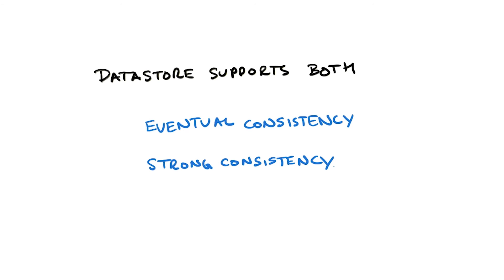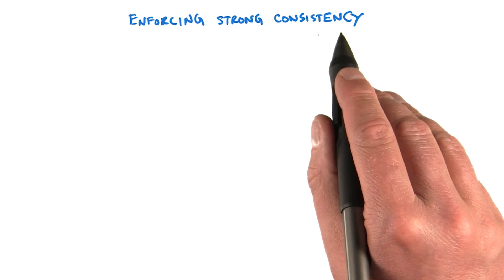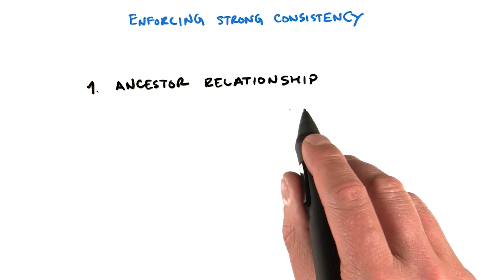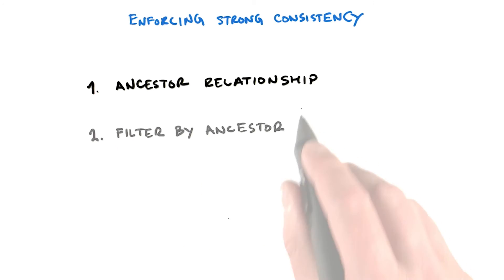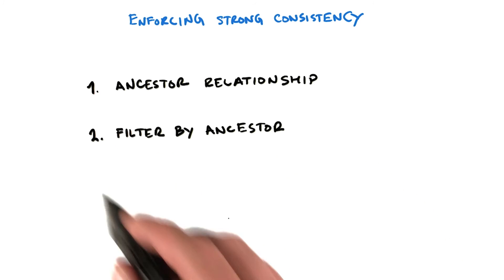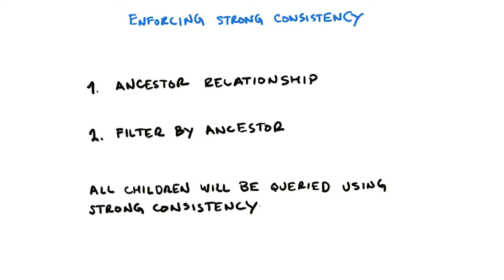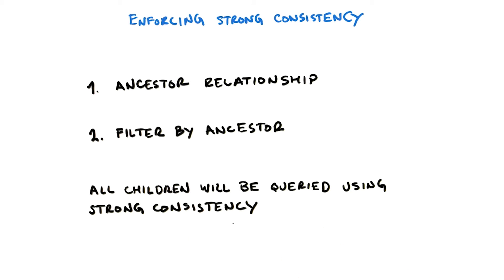Let's see how, because it's quite simple. You enforce strong consistency when you have an ancestor relationship and your query filters by this ancestor. If those two conditions are met, all children will be queried using strong consistency. In all other cases, data will be retrieved using eventual consistency.